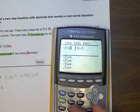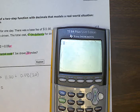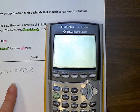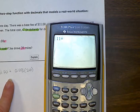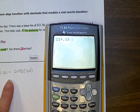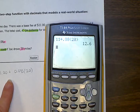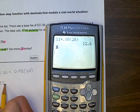So, let's solve and find out what happens. Let me clear my calculator. Okay, so I'm going to type in exactly what this says: 11 plus .08 times 20. See how that looks just identical? I press enter, and I got 12.6.